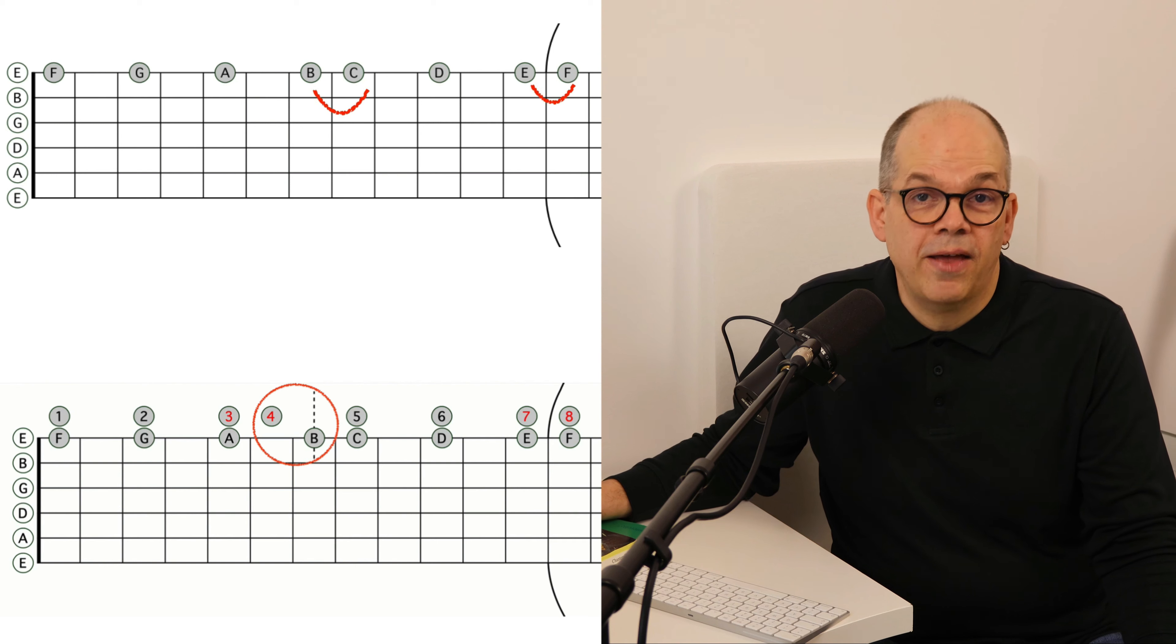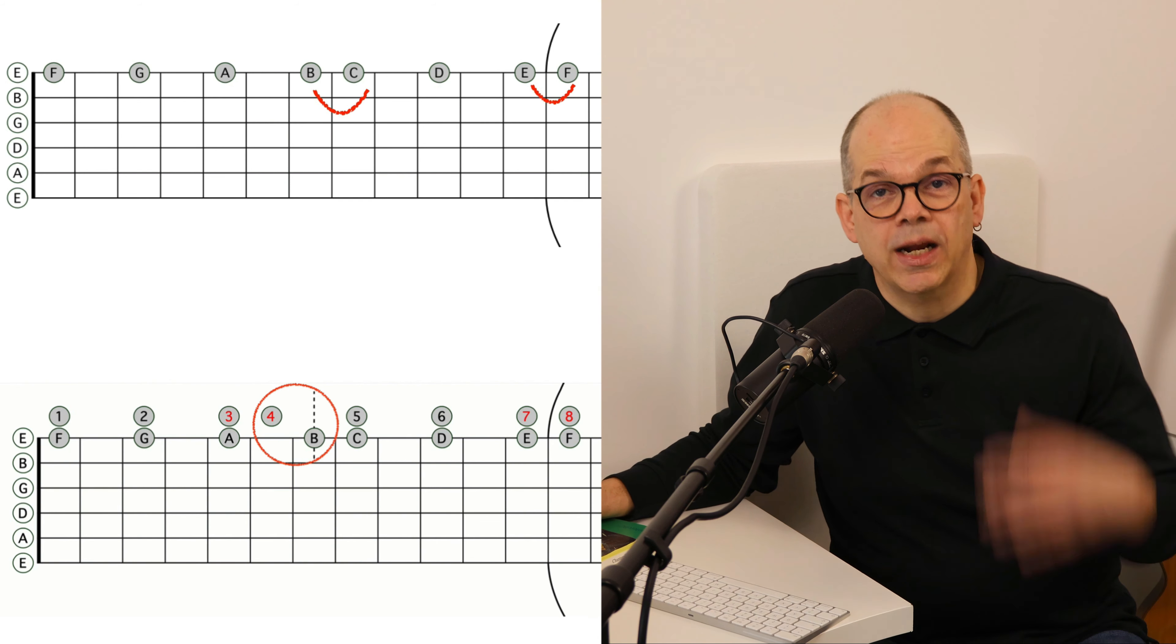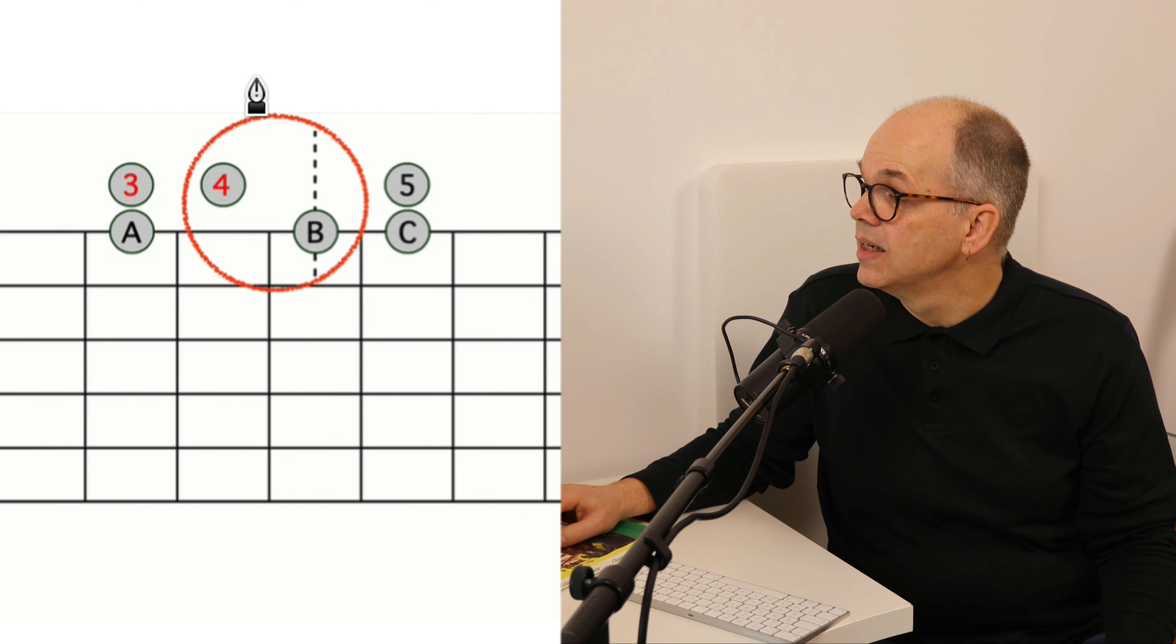But if we now compare this to this F major scale we already played, you see that in this point there is a difference. Because the structure is 1, 2, 3, 4, 5, 6, 7,